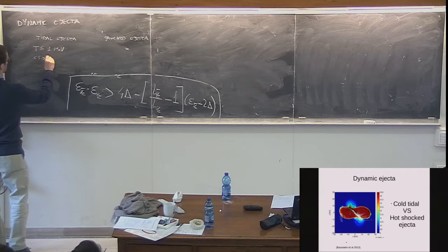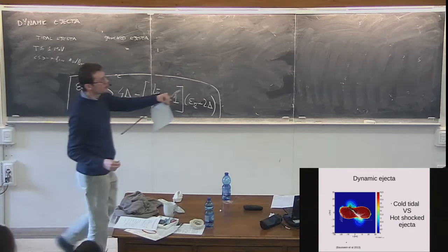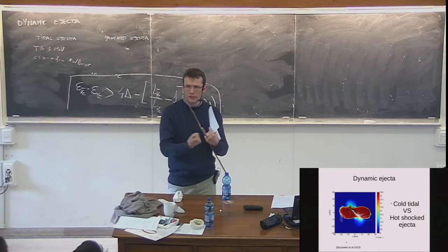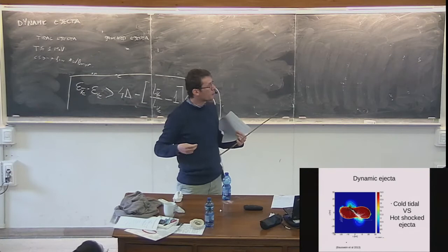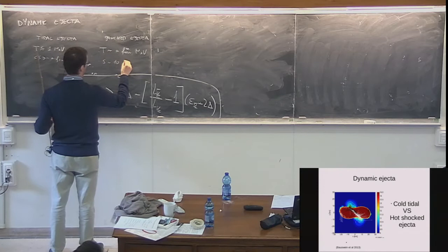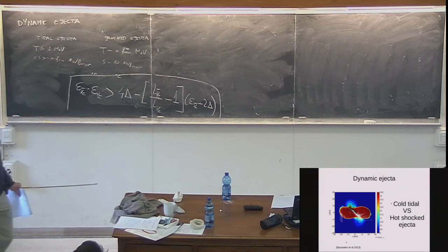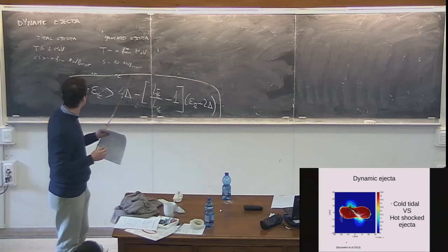For the shock-heated ejecta, the two stars crash and dissipate kinetic energy into internal energy. This heat does PdV work that launches matter. Here the temperature can be a few MeV and entropy rises to order 10 k_B per baryon. The question is: are neutrinos important? As we heard in the context of neutrino-driven winds, neutrinos can be absorbed. The question is whether there is enough time.